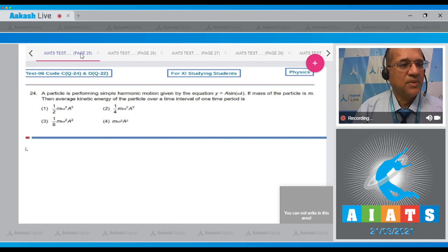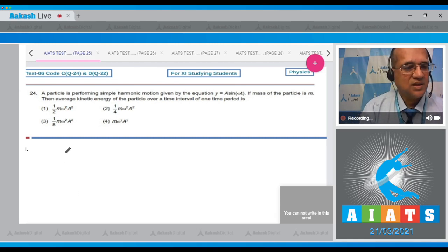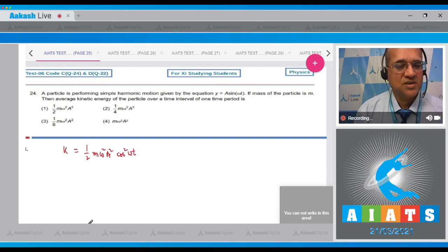Question number 24: A particle is performing simple harmonic motion given by equation y equals a sine of omega t. If the mass of the particle is m, then the average kinetic energy is equal to 1/2 m omega squared a squared cos squared omega t.